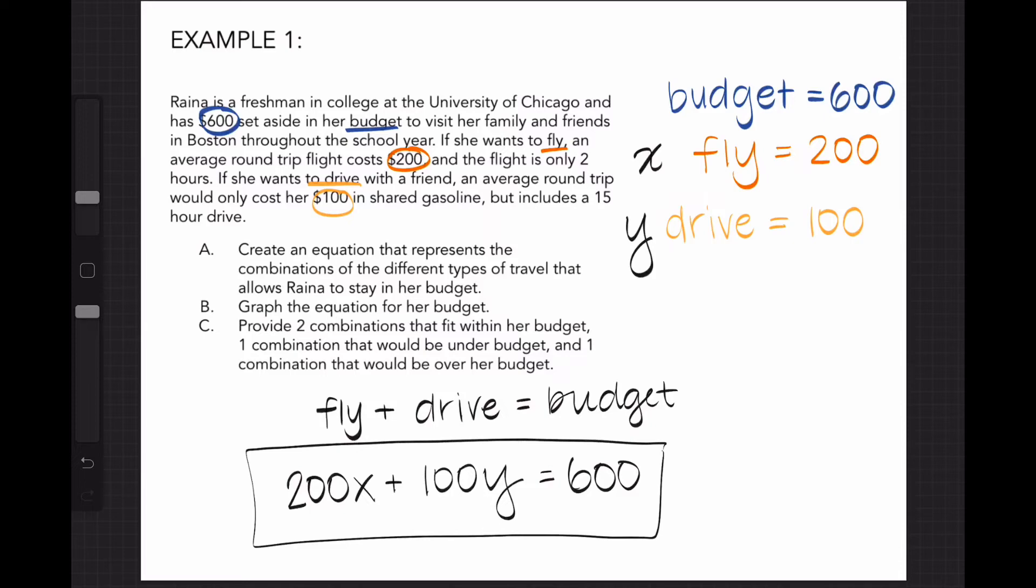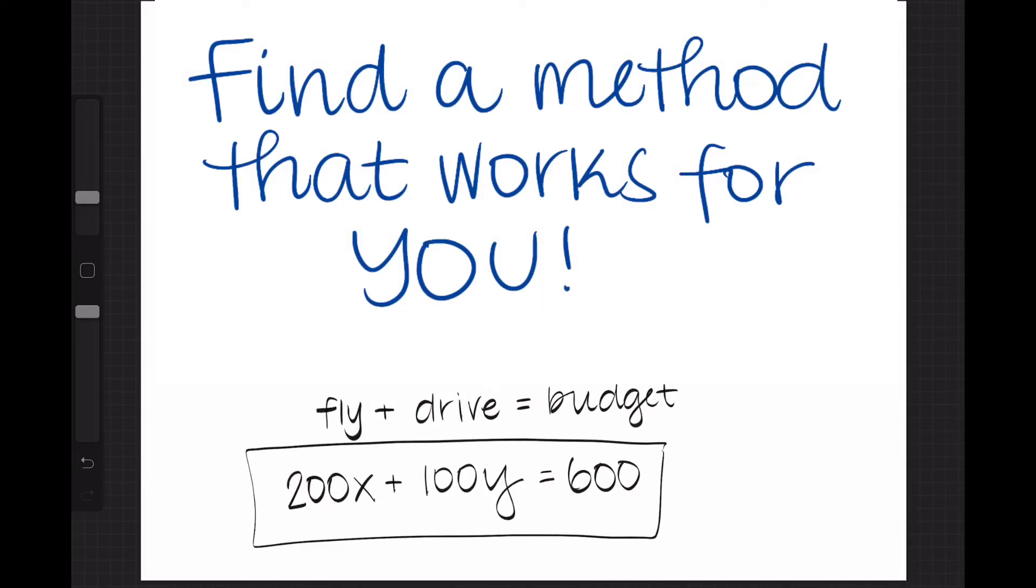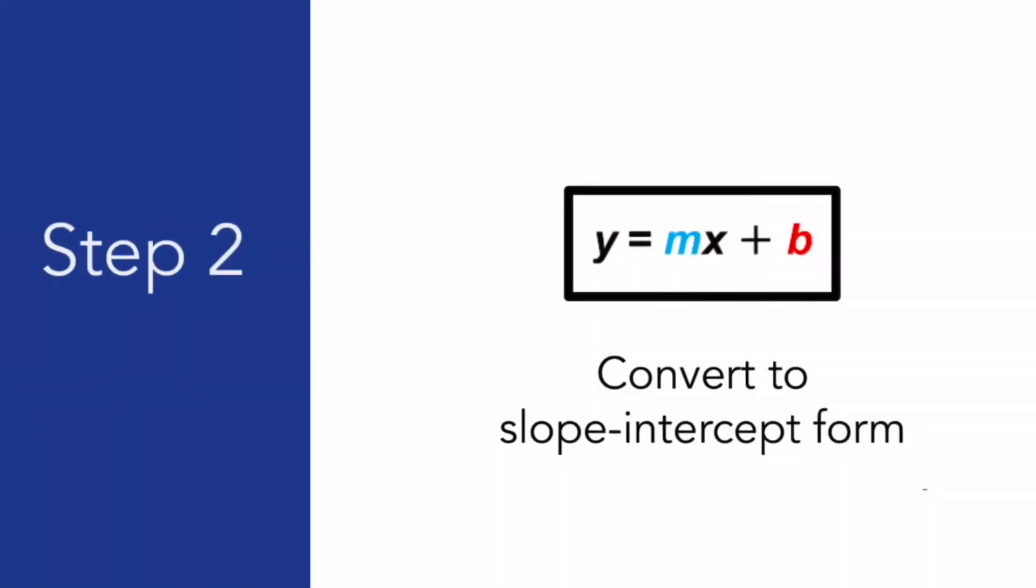Now that we have our equation, we are asked to graph it. There are multiple ways to graph an equation and you can choose a method that works for you. But I think the easiest way to graph an equation is to use slope intercept form. So I'll show you how to convert the equation we have to Y equals MX plus B, where M represents the slope, and B represents the Y-intercept.